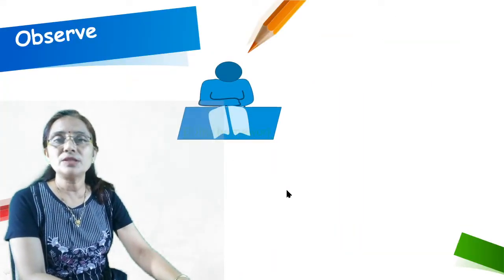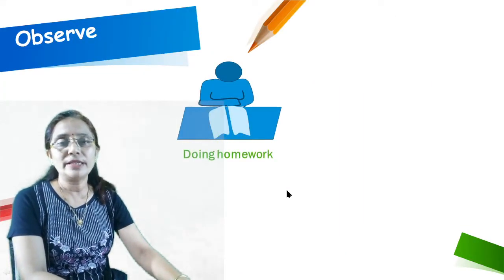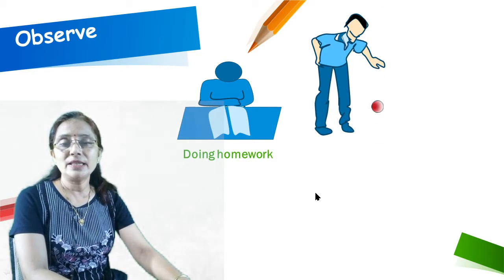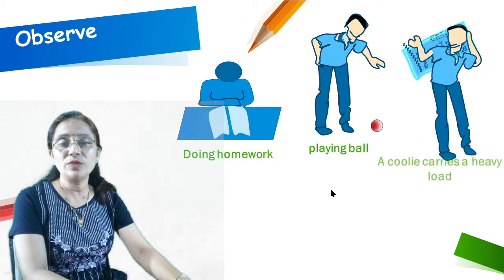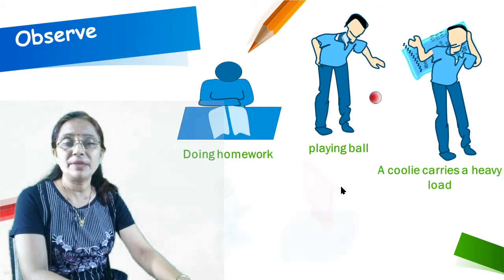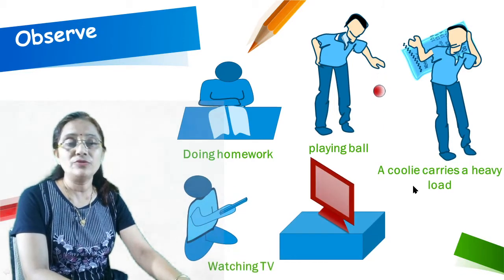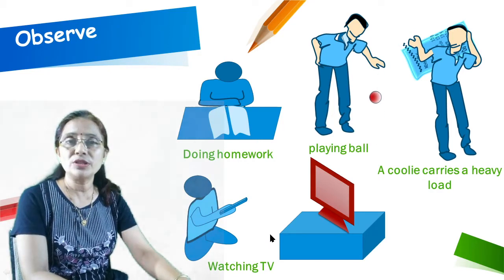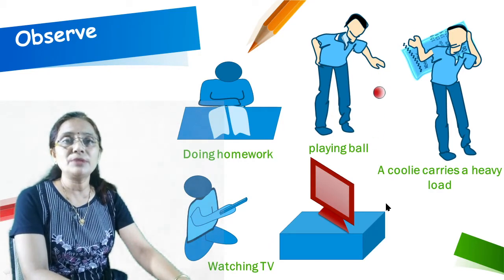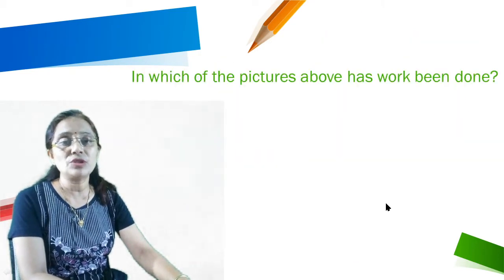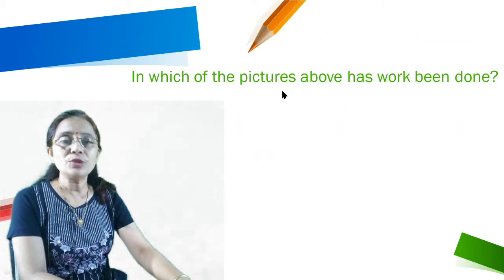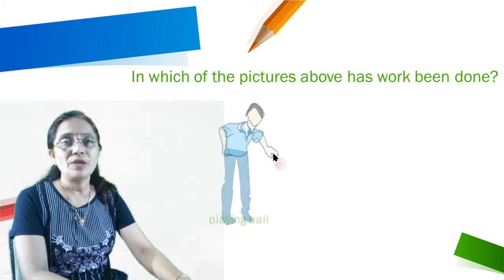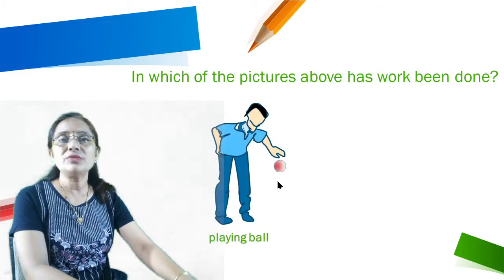Observe the diagram. The diagram shows activities: doing homework, playing ball, cooking, carrying a heavy load, and watching TV. So, there are 4 figures. Our question is: in which picture has work been done?